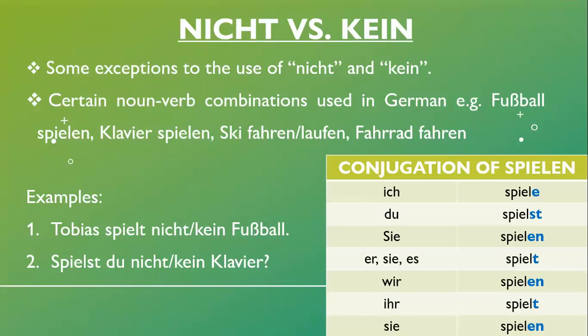Whenever you see these noun-verb combinations — where the noun comes together with the verb in a sentence or question — you can use either 'nicht' or 'kein' for negation. For example: 'Tobias spielt nicht Fußball', but you can also say 'Tobias spielt kein Fußball'.